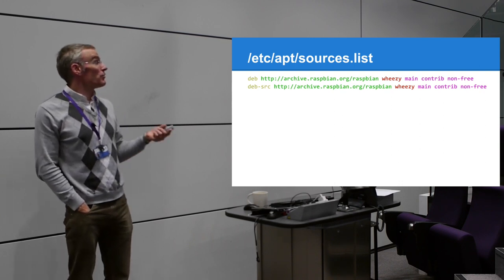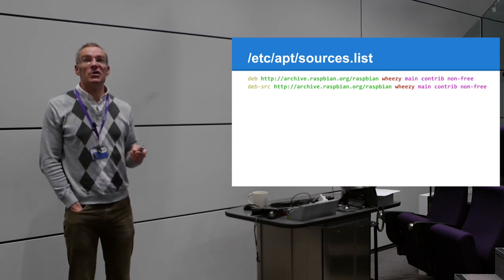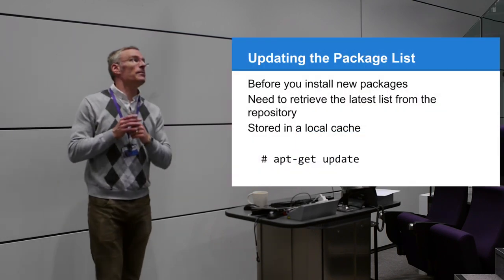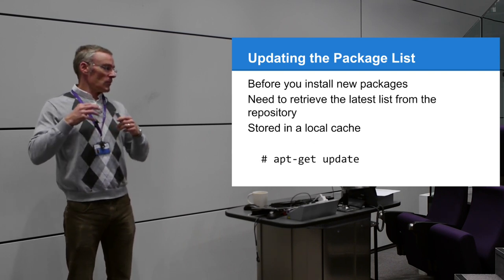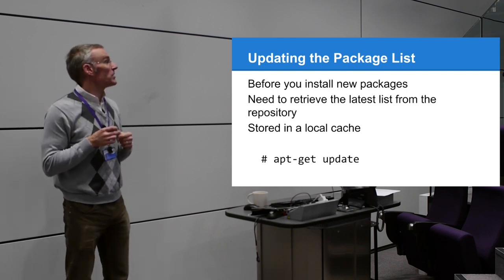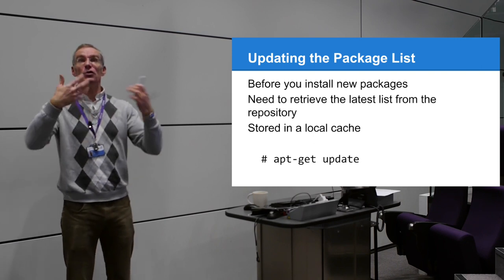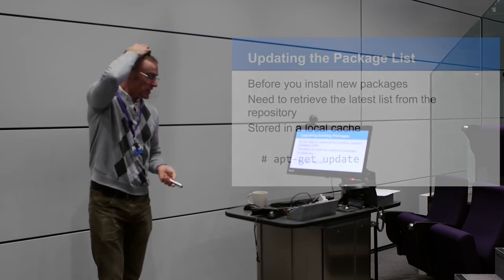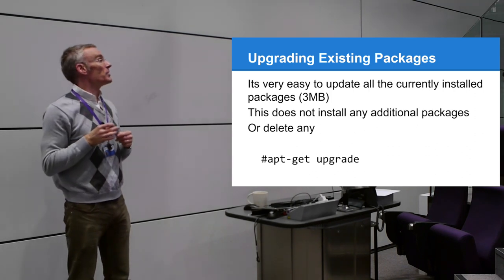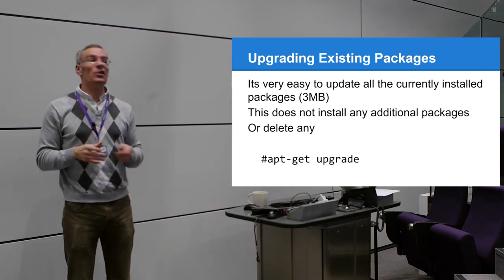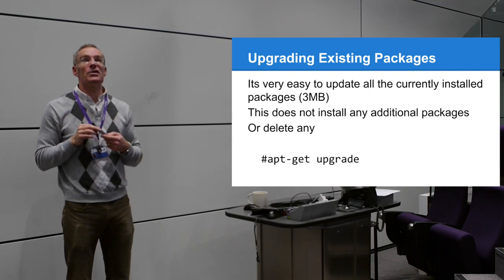Before installing packages, download the list of all available packages with `apt-get update` - this updates the local package list so it doesn't have to contact the server every time you search. Then run `apt-get upgrade` to upgrade all currently installed software to the latest version. That one command will update every single piece of software on your Raspberry Pi - it checks every package, finds updates, and downloads and installs them.